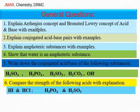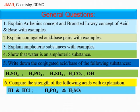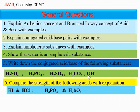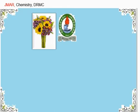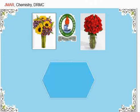Now, some general questions. Question 1: Explain the Arrhenius concept and Brønsted-Lowry concept of acid and base with examples. Question 2: Explain conjugate acid-base pairs with examples. Question 3: Explain amphoteric substances with examples. Question 4: Show that water is an amphoteric substance. Question 5: Write down the conjugate acid-base of sulfuric acid, phosphoric acid, sulfurous acid, carbonic acid, and hydroxide ion. Also compare the acid strength of hydrogen iodide vs. hydrogen chloride, and phosphoric acid vs. sulfurous acid. That is the end of the lecture. Thanks to all.